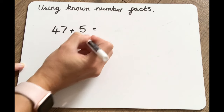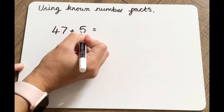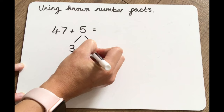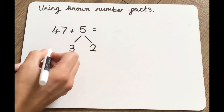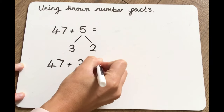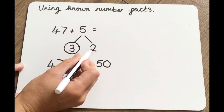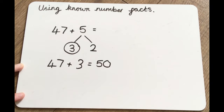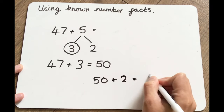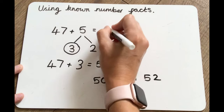So we're going to partition this number into 3 and the number that goes with 3 to make 5. What number do we need to add to 3 to make 5? We need to add 2. So first of all we do 47 add 3 equals 50, because that's the next 10. But we've only added the 3, so now we're going to add the 2 to our answer. So 50 add 2 equals 52. Therefore 47 add 5 equals 52.